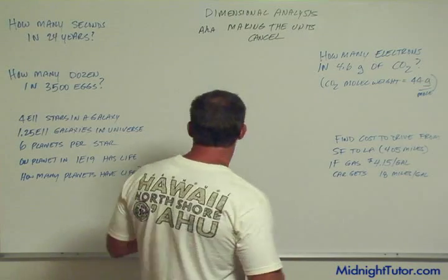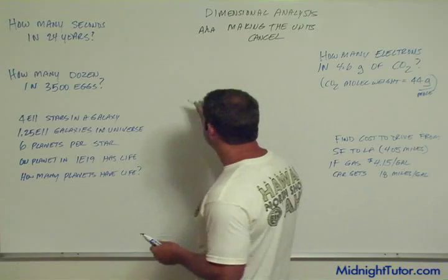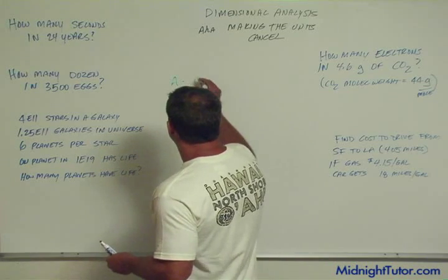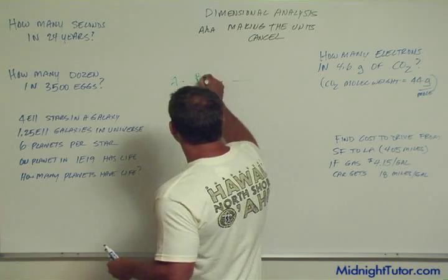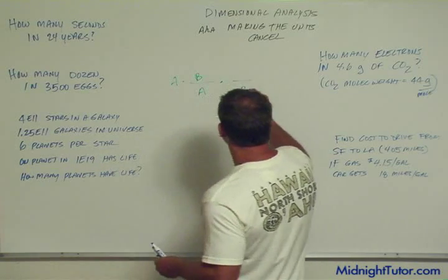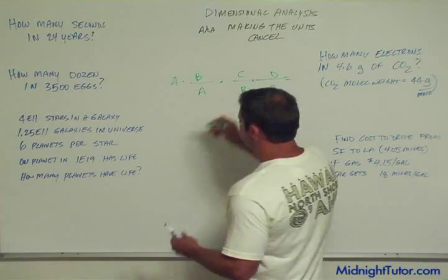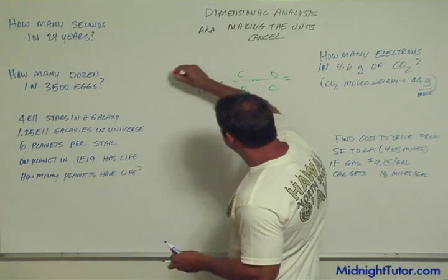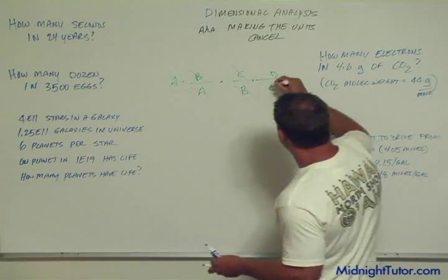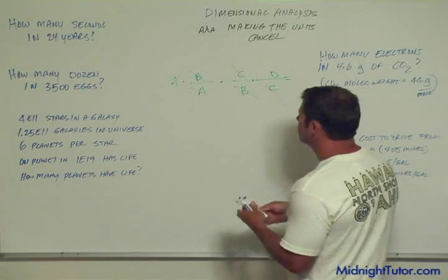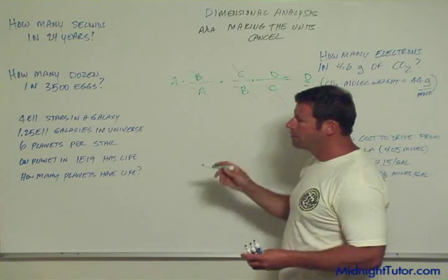Let's start with the simple one, and then you'll see how this evolves. It's all about having units cancel. If I have A, and then something with A in the bottom — say B over A — and then B in the bottom with C, and so on, all those things cancel. The A's cancel, the B's cancel, the C's cancel, and I'm left with D, which is what I wanted.